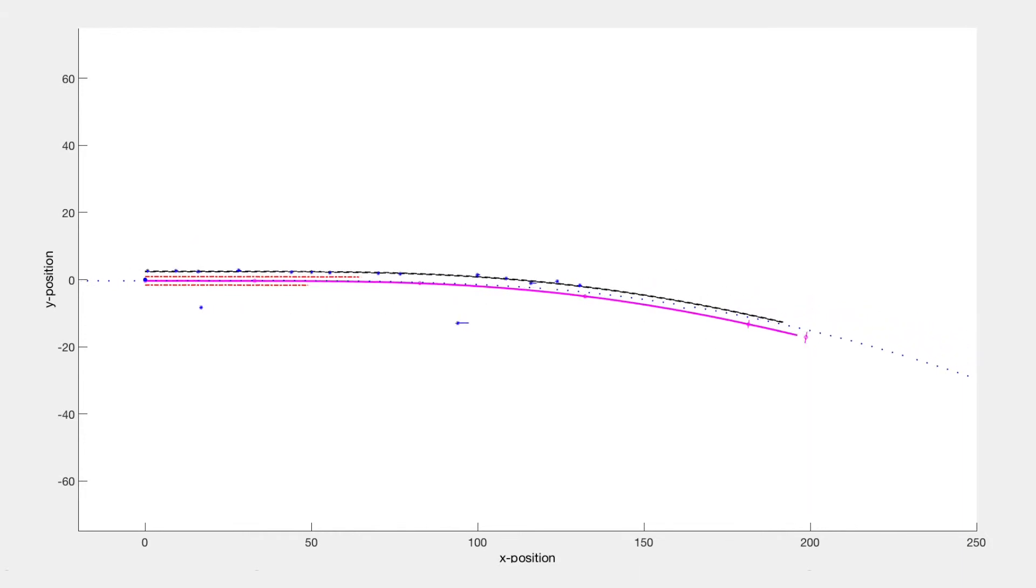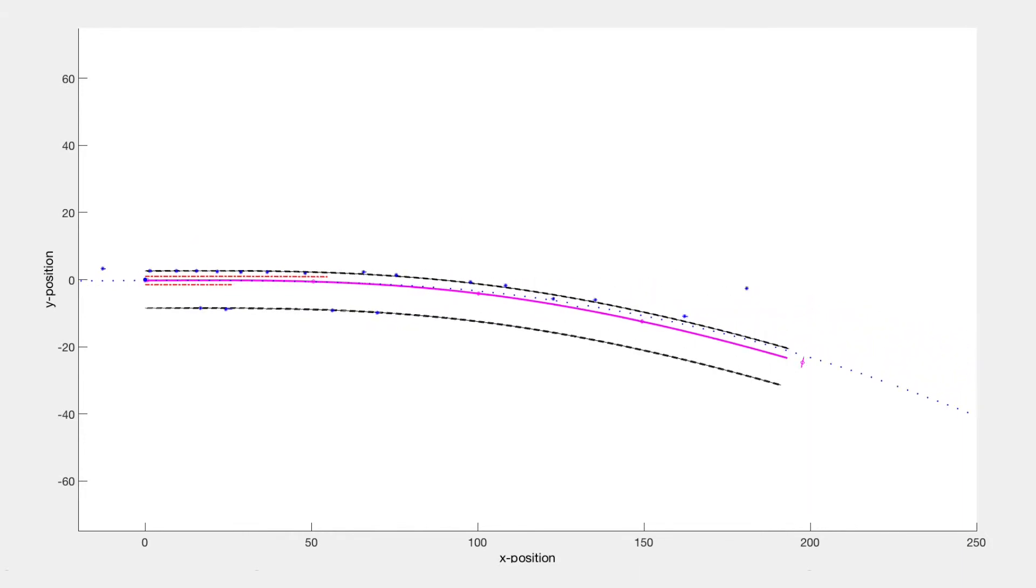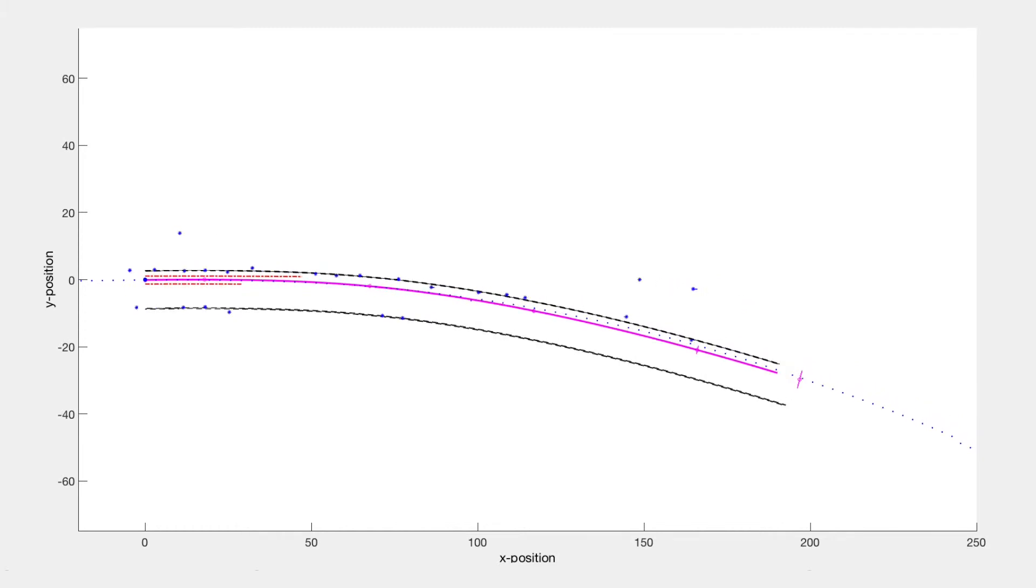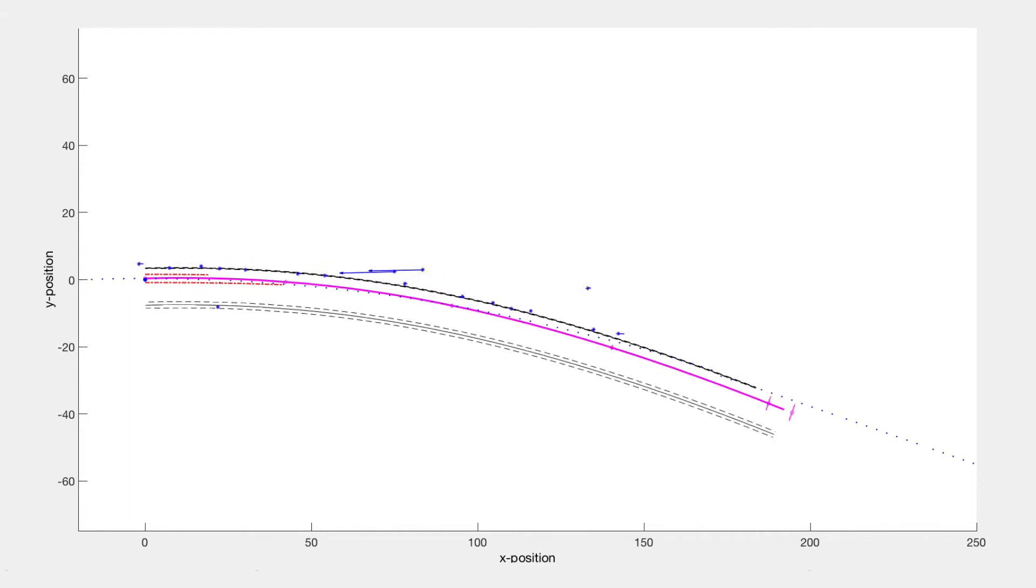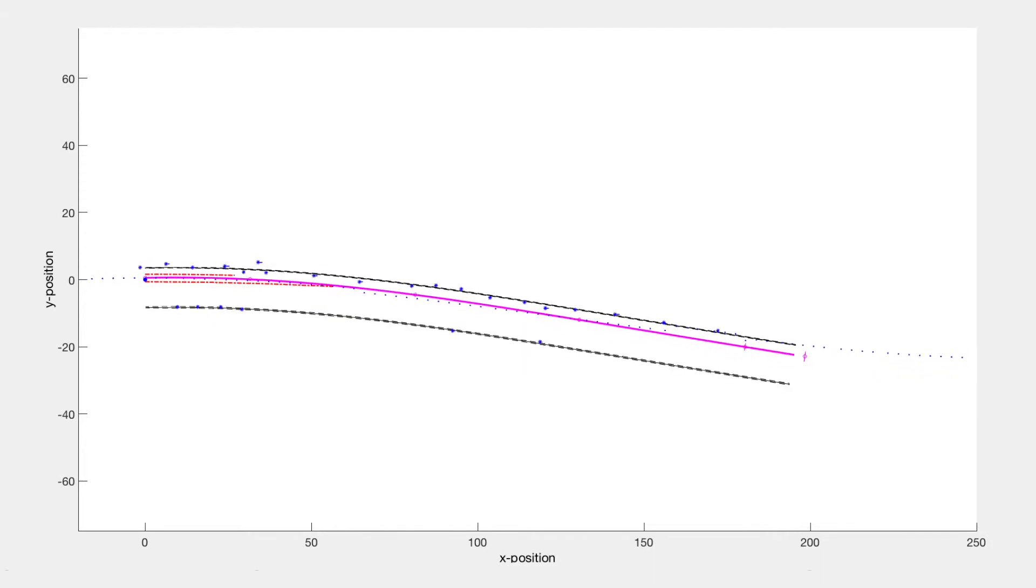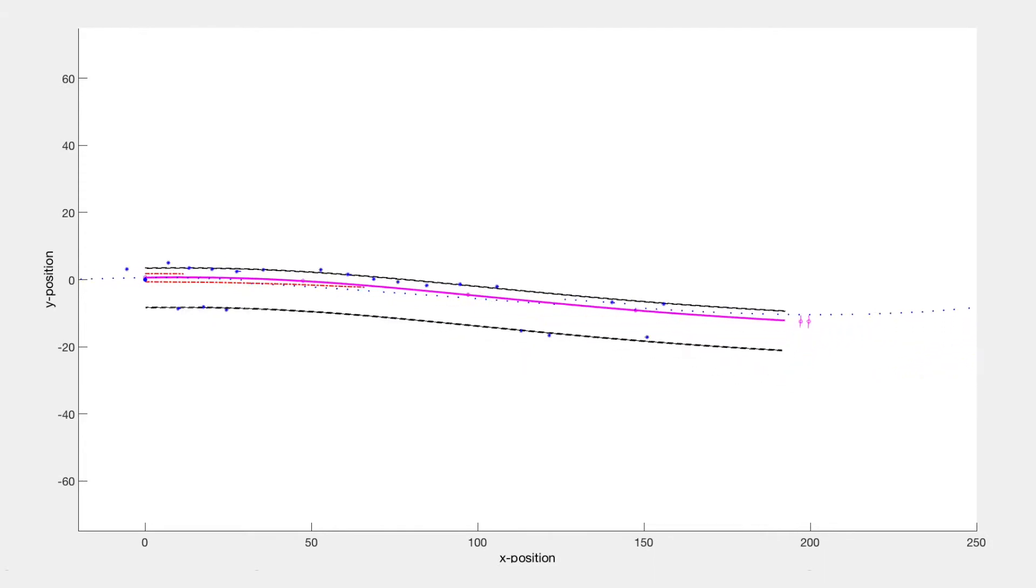What's happening here is that we get limited information about the shape of the road at 200 meters, so we assume that the road is still bending when it's actually starting to straighten out. We should also note that our uncertainty increases here. Once we get new observations telling the filter that the road has straightened out, our filter quickly adapts.